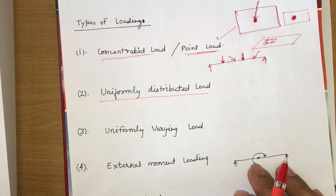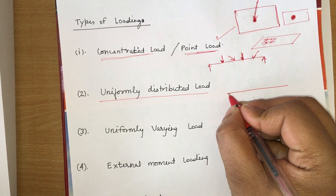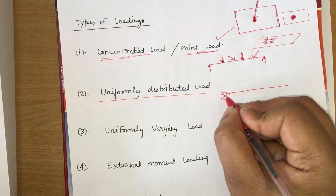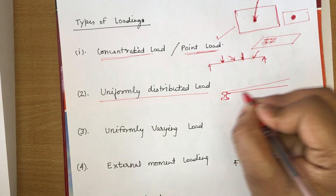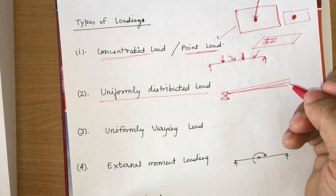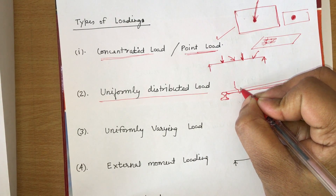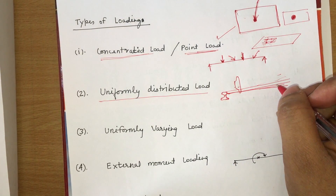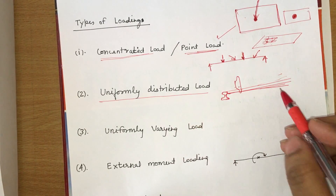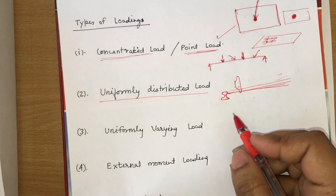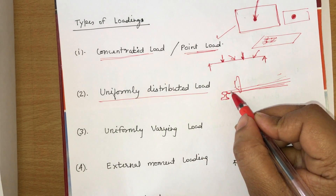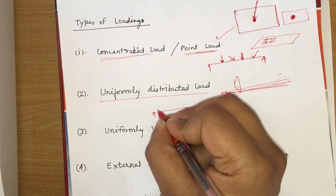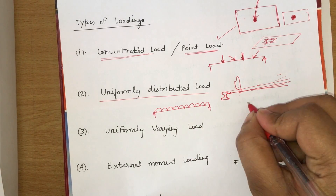Another type is uniformly distributed load (UDL). An example is a railway track: with n number of wheels in a series, the load applied on the track is a uniformly distributed load. Also, the self-weight of a beam is uniformly distributed over its whole length. This is the symbol for uniformly distributed load as seen in diagrams.